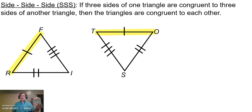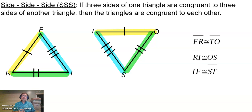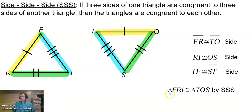Looking at this example, FR is congruent to TO because they each have one tick mark. RI is congruent to OS, and FI is congruent to TS. All three sides on the left are congruent to all three sides on the right. So triangle FRI is congruent to triangle TOS by the Side-Side-Side postulate. That is the first way we can tell two triangles are congruent.